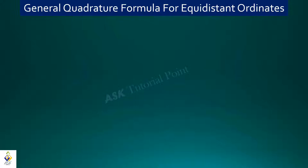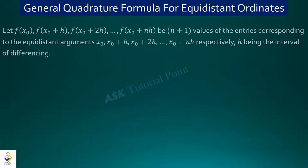There is a specific procedure to derive the numerical integration formula. I am going to use interpolation, as we studied in chapter 1. To derive the general quadrature formula, let us take f(x₀), f(x₀ + h), f(x₀ + 2h), up to f(x₀ + nh).